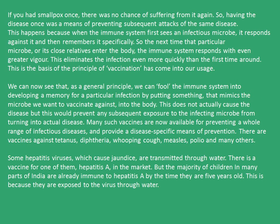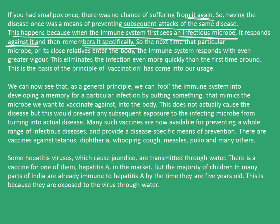Now let's take an example of smallpox. If you had smallpox once, there was no chance of suffering from it again. So having the disease once was a means of preventing subsequent attacks of the same disease. This happens because when the immune system first sees an infectious microbe, it responds against it and then remembers it specifically. So the next time that same particular microbe or its close relative enters the body, the immune system responds with even greater strength, eliminating the infection even more quickly than the first time.